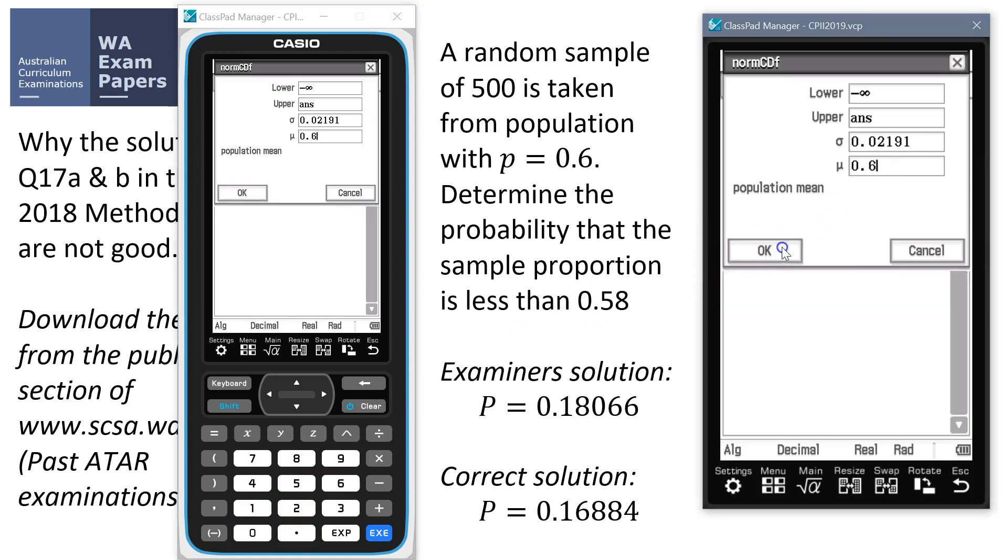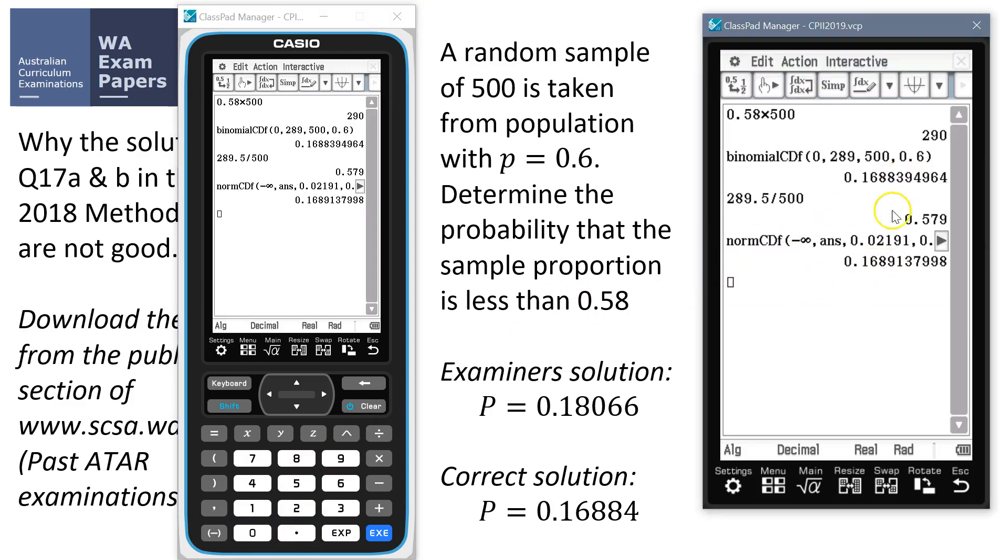All right. On that one. But that's using the upper limit is 0.579, using a continuity correction rather than 0.58. Anyway, a pretty bad answer. A pretty bad question. All in all, let's hope we don't see any of this again.